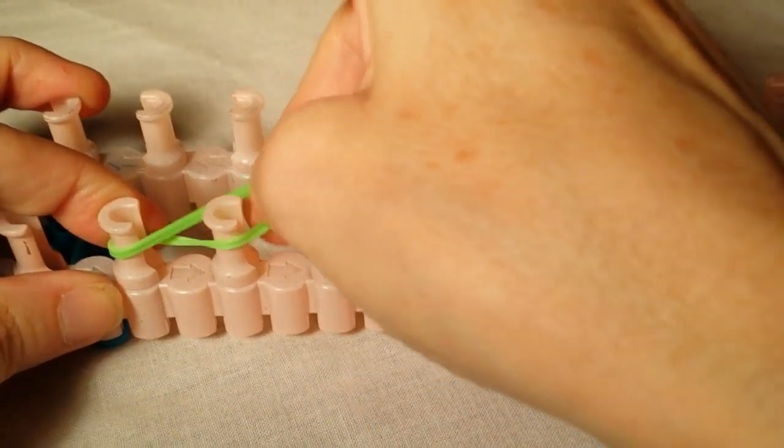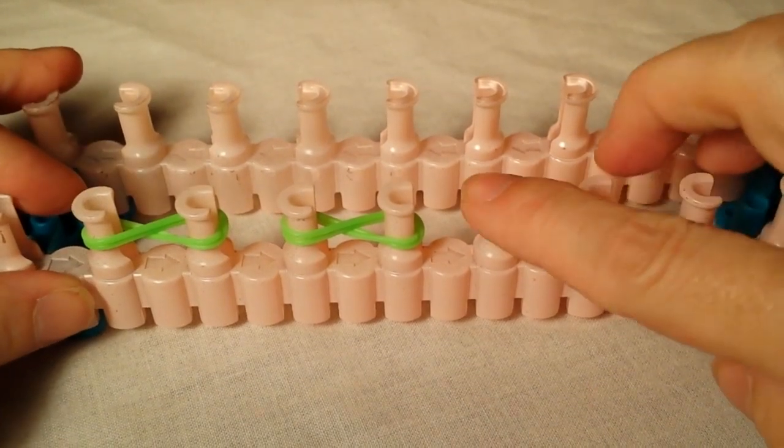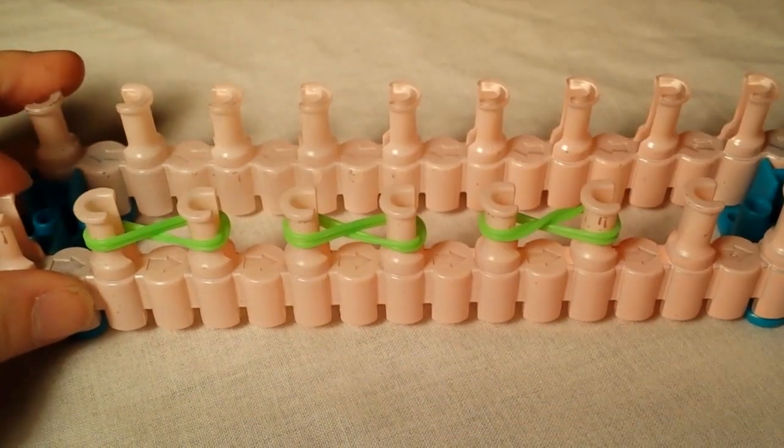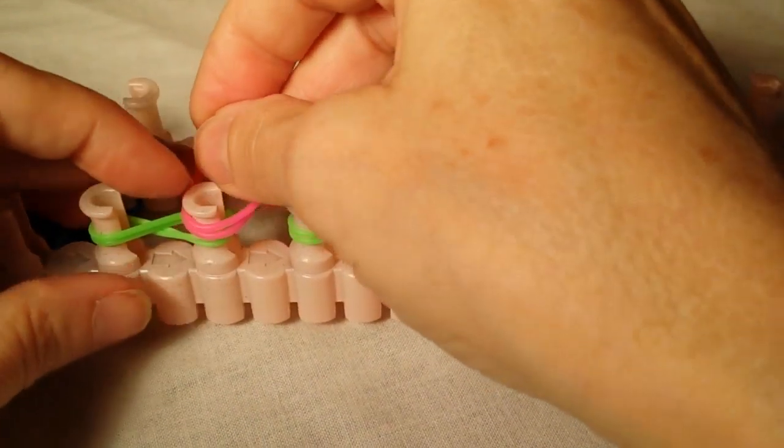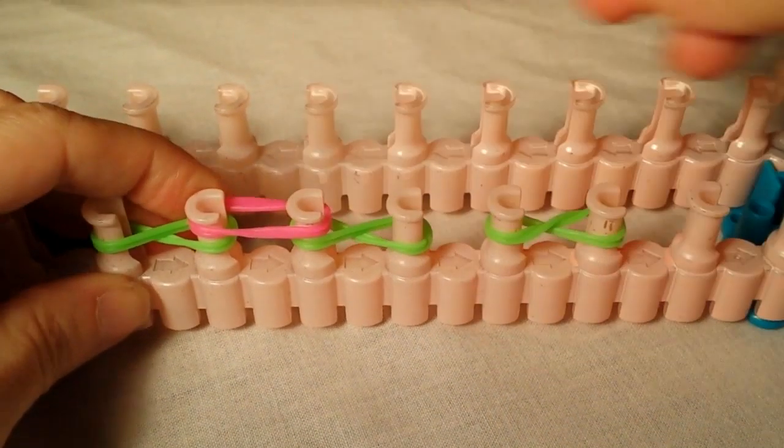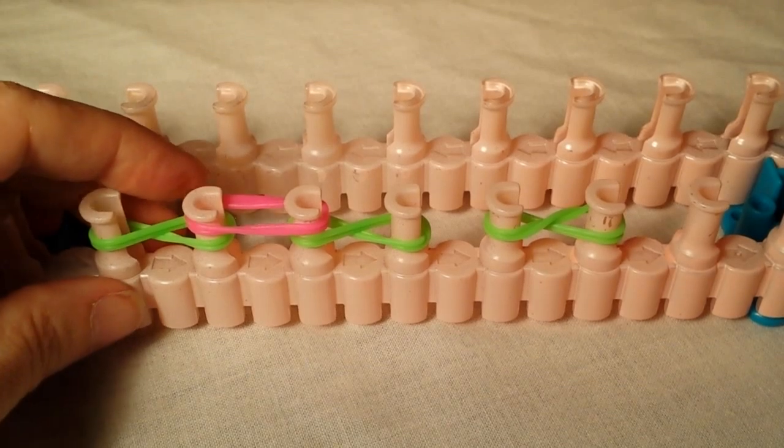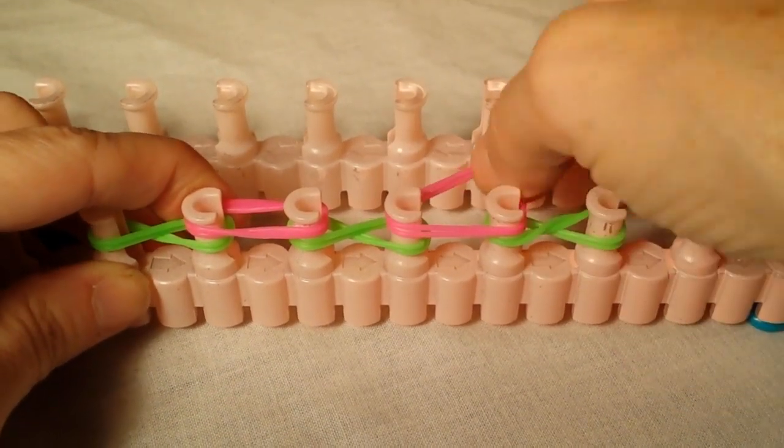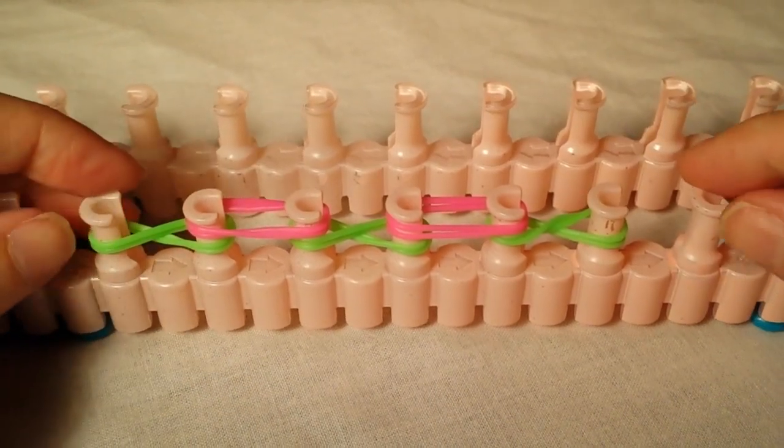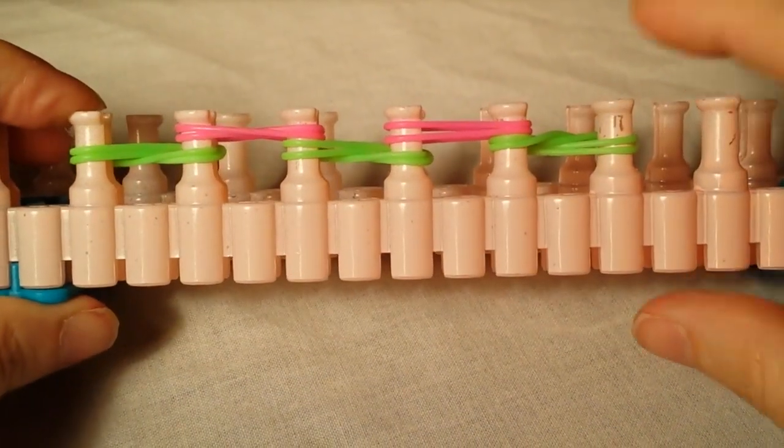Now I'm going to take an alternating color. You can use the same color if you want to. I just prefer to use a different color and put it two bands at a time on the alternating pegs. So the setup is the same as a double cap dragon scale.